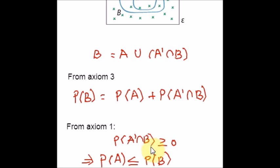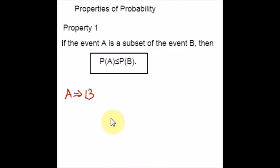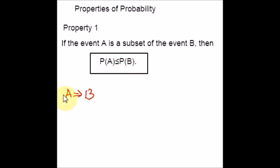This property has a very useful application. If A implies B — meaning if A occurs then B also occurs — this is the same as A being a subset of B. Therefore it implies P(A) ≤ P(B). This property will be applicable in many problems.